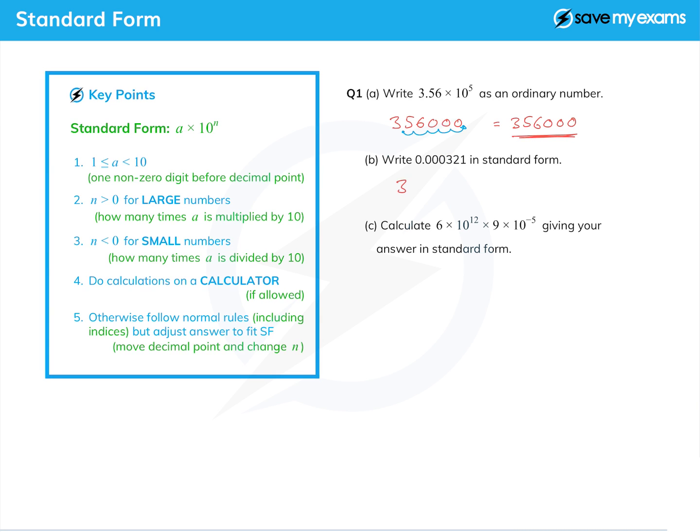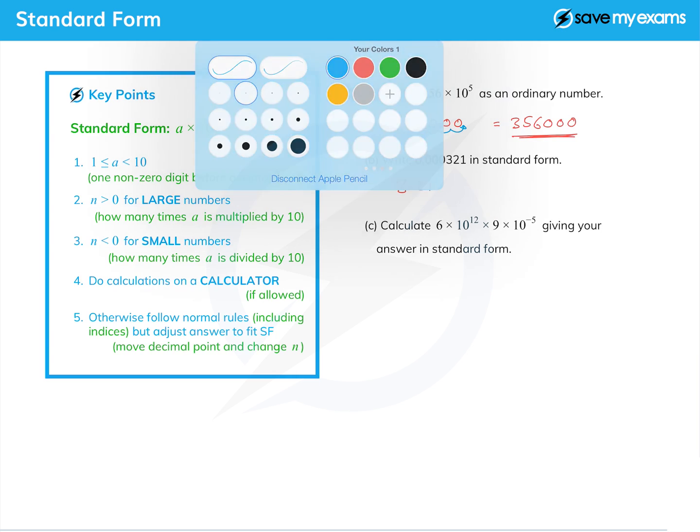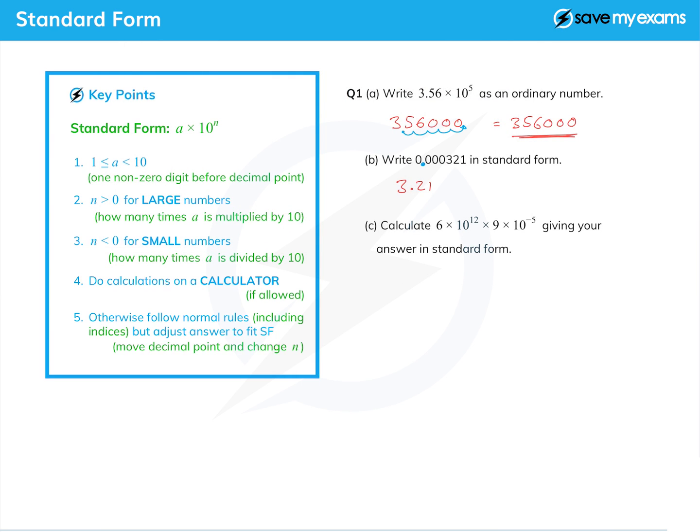Where was the decimal point to start with? Well, it was here in the question, and so we need to move it one, two, three, four times to that position there, which is what we've already done. Because we're moving it to the right and we're making it very small, we're dividing by 10, so the number at the top will be negative. So that 4 is a minus 4, and there is my answer.